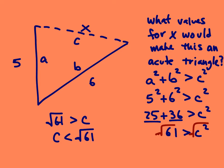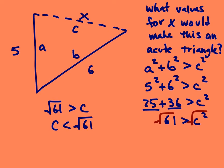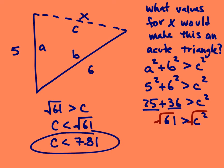The square root of 61 is approximately 7.81. So the value for C would have to be less than 7.81, meaning any value for C smaller than 7.81 will give an acute triangle. This is a range of values. I hope you enjoyed this video — we'll talk to you soon. Thanks, bye.